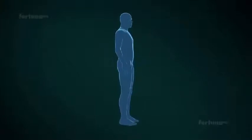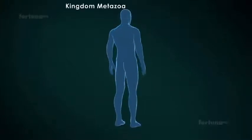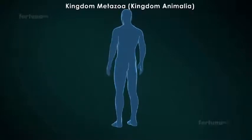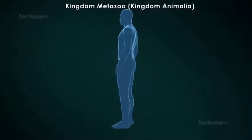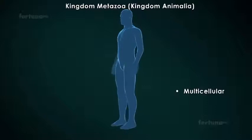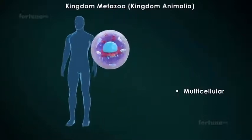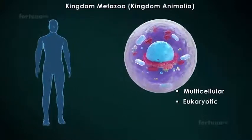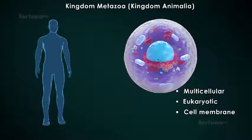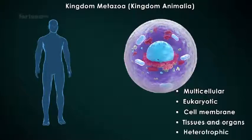Finally, we reach the kingdom with the most complex organisms: Kingdom Metazoa, or Kingdom Animalia. It includes animals, which are multicellular organisms. The cells of these organisms are eukaryotic, and although they do not have a cell wall, they do have a cell membrane. All members of this kingdom have tissues and organs. Animals are heterotrophic, meaning they depend on other living things for food.